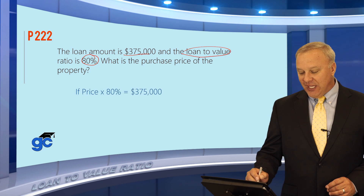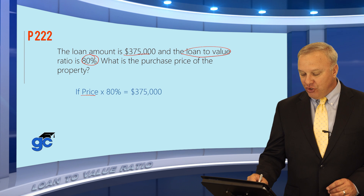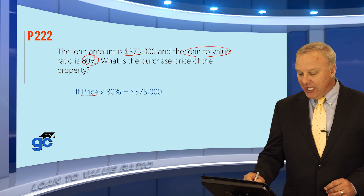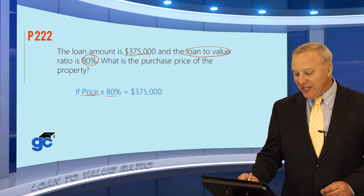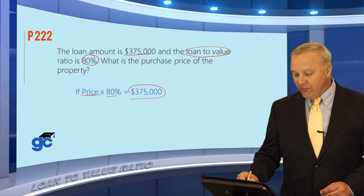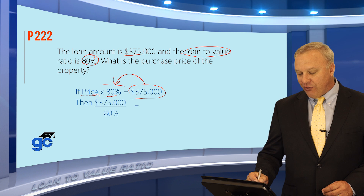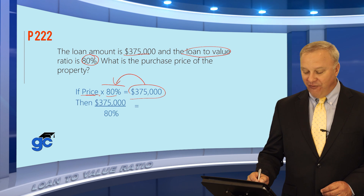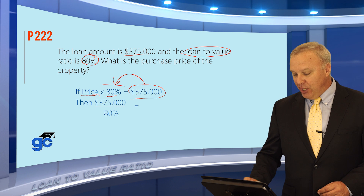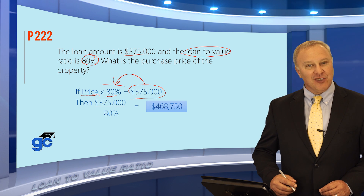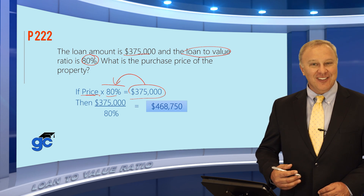What we do here is a classic if-then question. If the price — something here that you don't know — times 80% equals $375,000, then in order to resolve this, just take this number, put it on top, and divide. So $375,000 divided by 80%, or 0.8, whichever you prefer, would tell you that the purchase price of this property was $468,750.